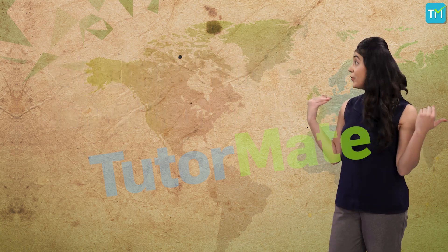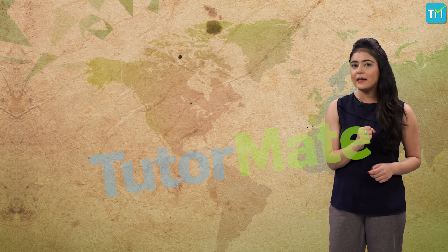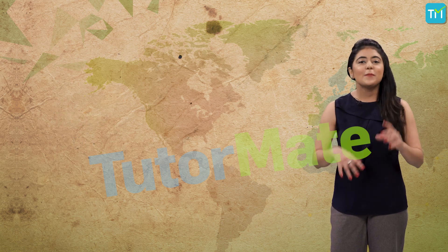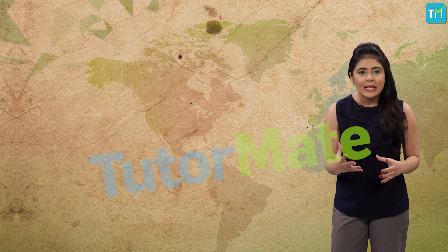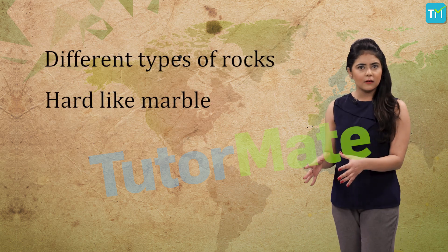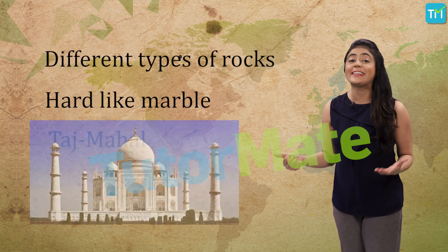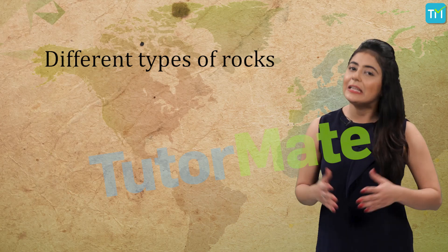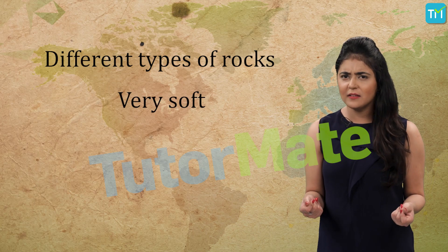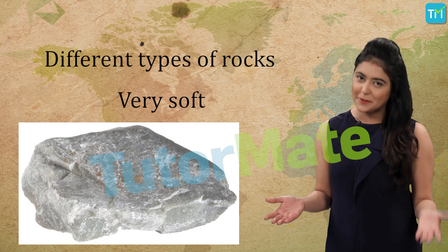When we look all around us, the common things that we see are rocks and soil. You must have noticed that there are different types of rocks. Some are hard, like the marble, which has been used for making the Taj Mahal. While others are very soft, like the soapstone, which is used to make talcum powder.